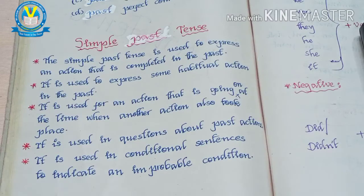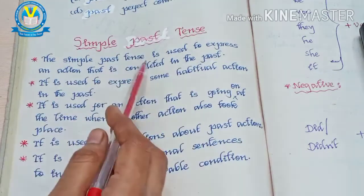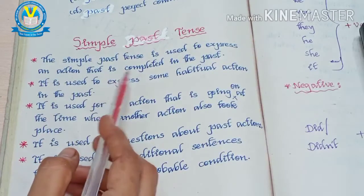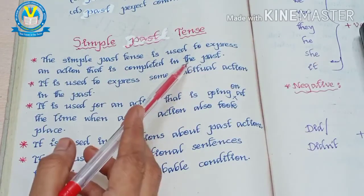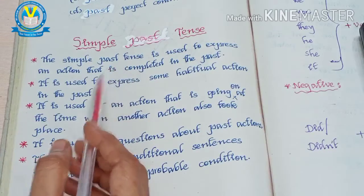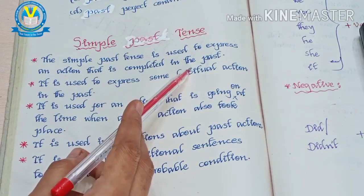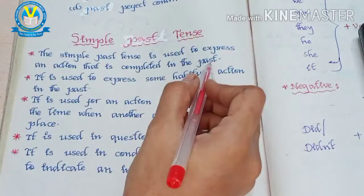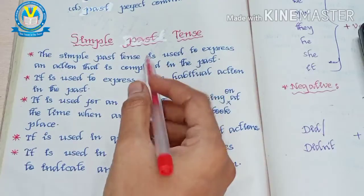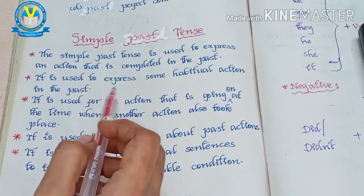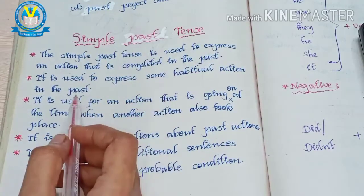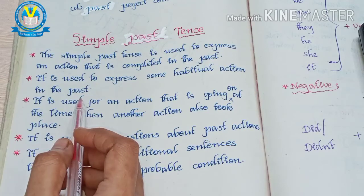Now we are going to discuss about simple past tense, the first type of past tense in this lesson. Look at the book clearly. The simple past tense is used to express an action that is completed in the past — an already completed action which we express using simple past tense.